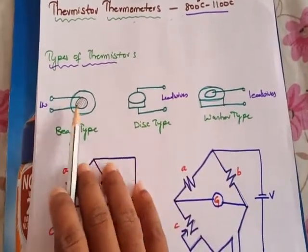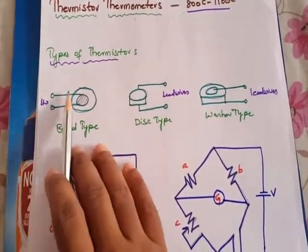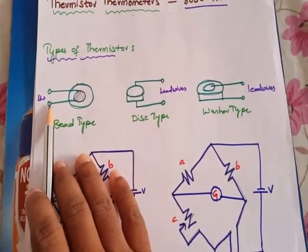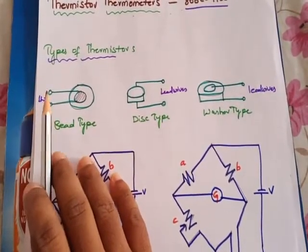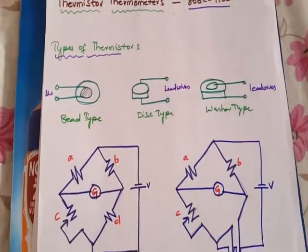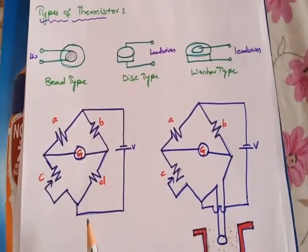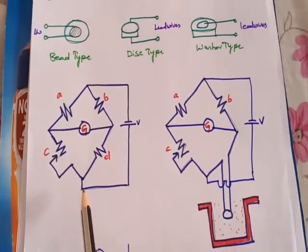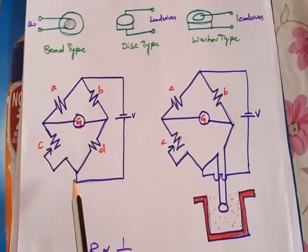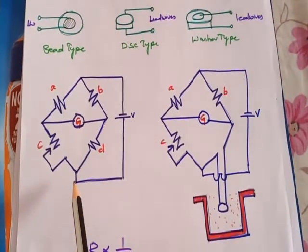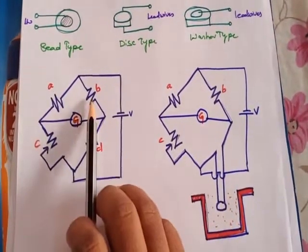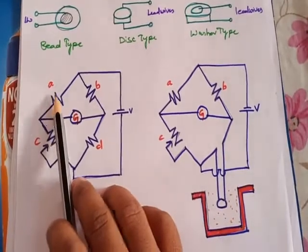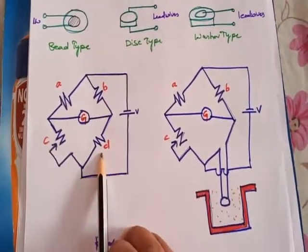They have two lead wires through which the temperature to be measured is connected. In order to explain the working of thermistor thermometers, we have to have the basic concept of the Wheatstone Bridge. You are already familiar with it — it consists of four arms having resistances A, B, C, and D.